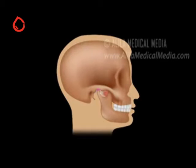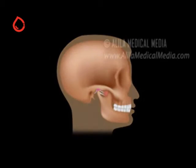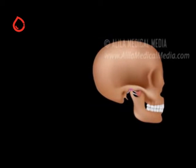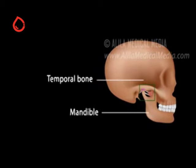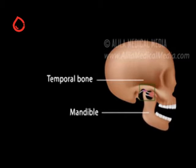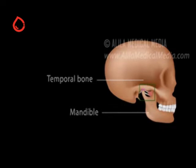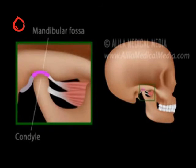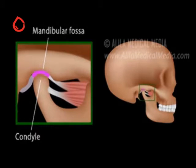The temporomandibular joint, the TMJ, is the joint between the lower jawbone, the mandible, and the temporal bone of the skull. The TMJ is responsible for jaw movement and is the most used joint in the body. The TMJ is essentially the articulation between the condyle of the mandible and the mandibular fossa, a socket in the temporal bone.